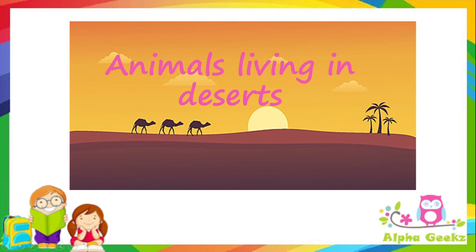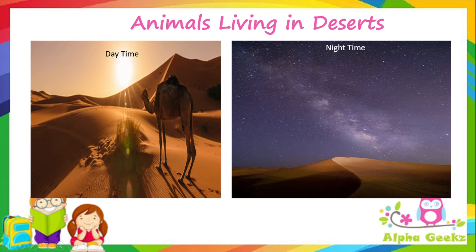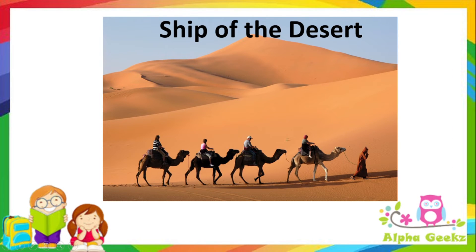Camels live in the desert, which is dry, receives scanty rainfall, and has extreme temperatures — very hot in the daytime and very cold at night. During the day, sand absorbs heat from the sun and becomes very hot; at night, the sand loses all its heat, making the desert cold. Sand is the main reason deserts are hot during the day and cold at night. Animals that live in the desert need to overcome excessive heat and scarce water availability, so their bodies have several adaptations.